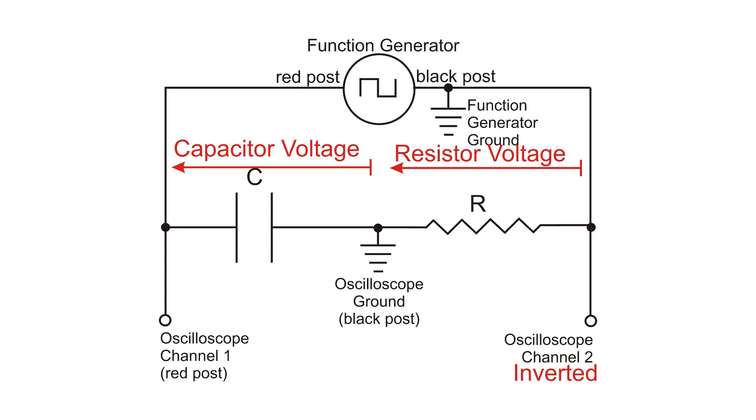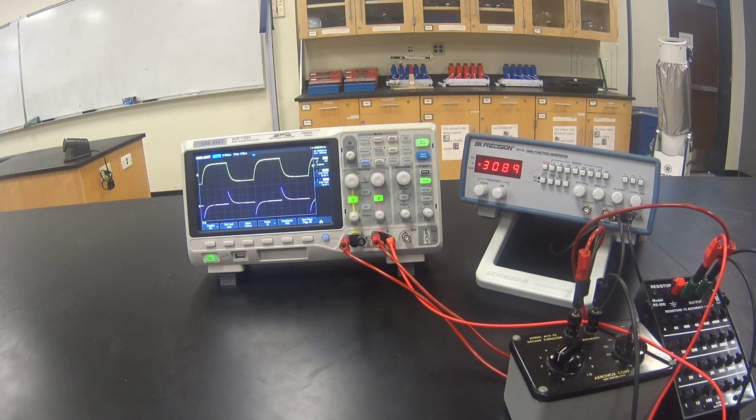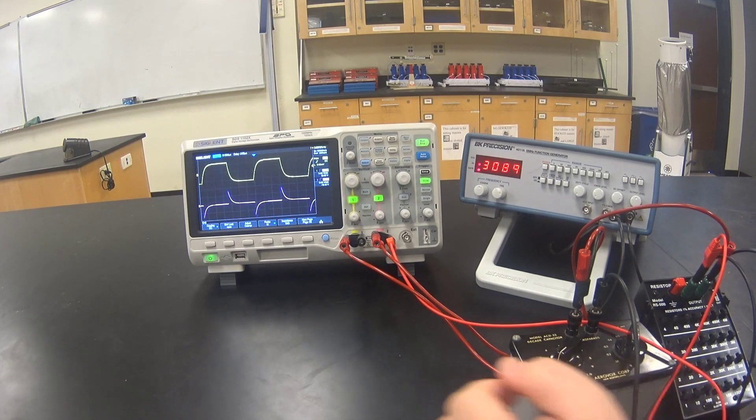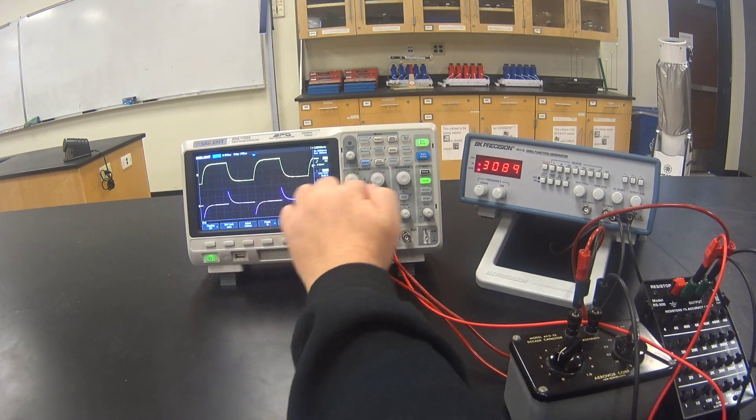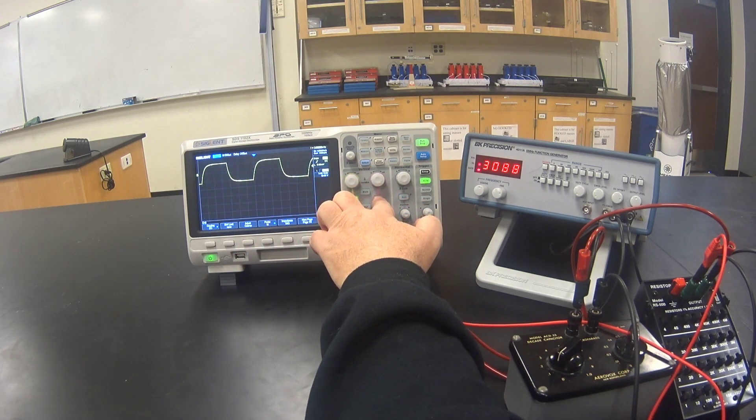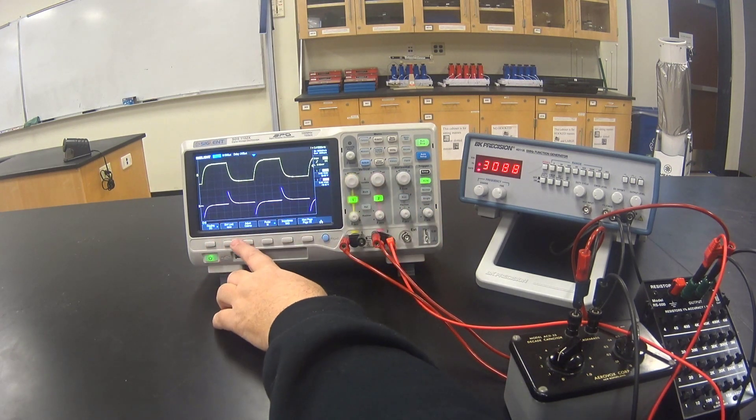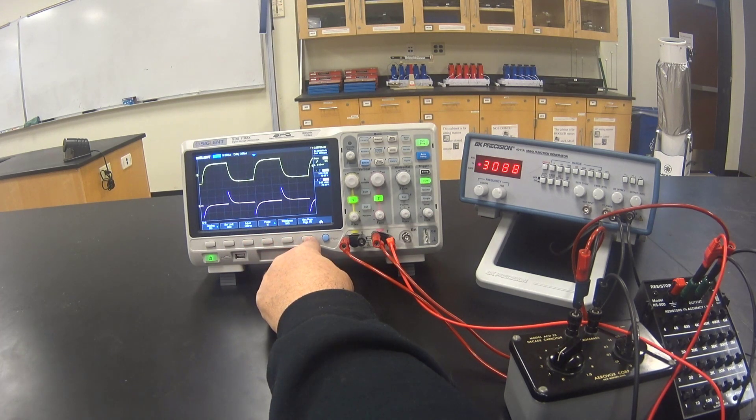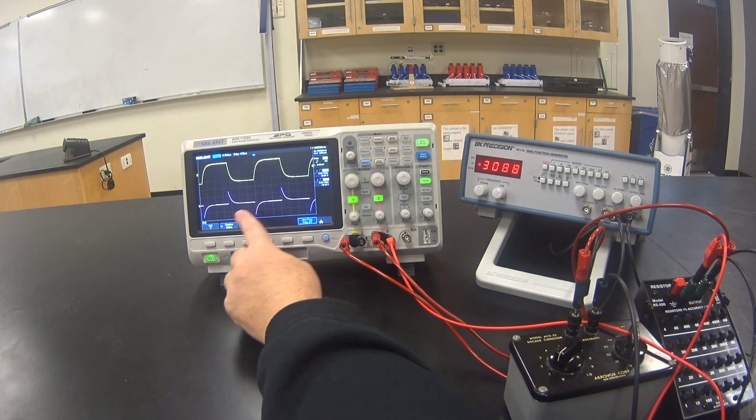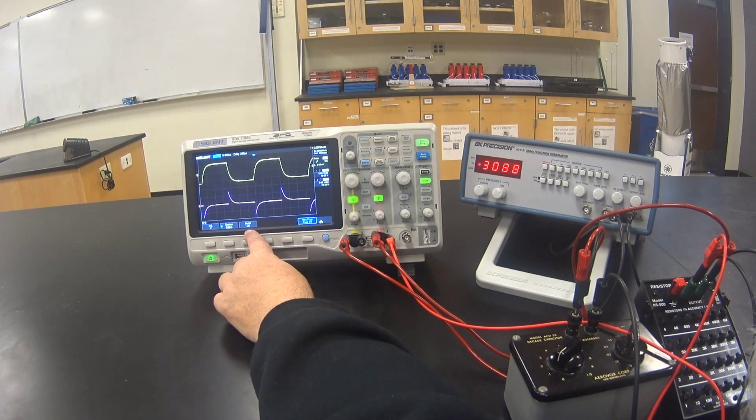Fortunately, there's a fix for that. We are able to invert the signal on either channel. Then channel two will be measured from the right to the left. The channel two menu should be selected, but if it's not, just press the channel two button on and off. Then press the button that says next page. Then the button that says invert, press it on.